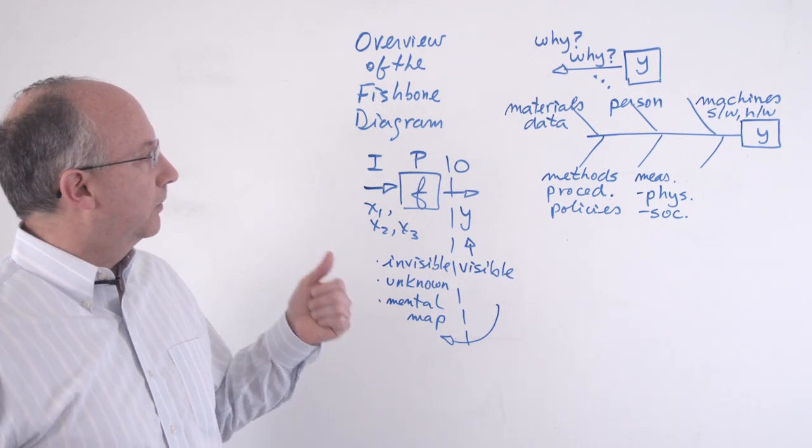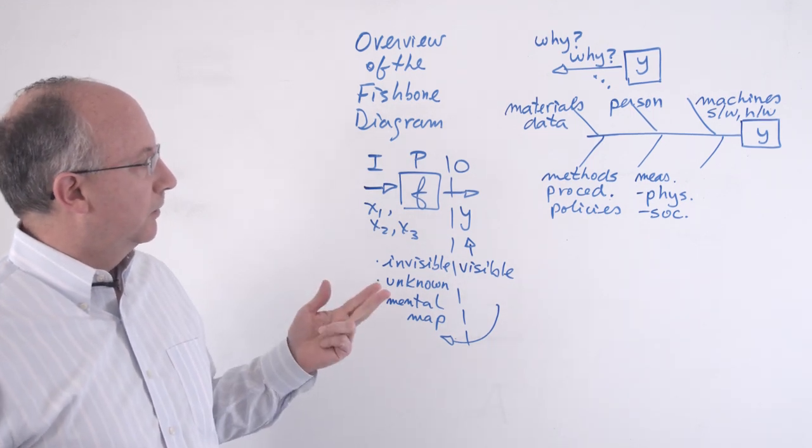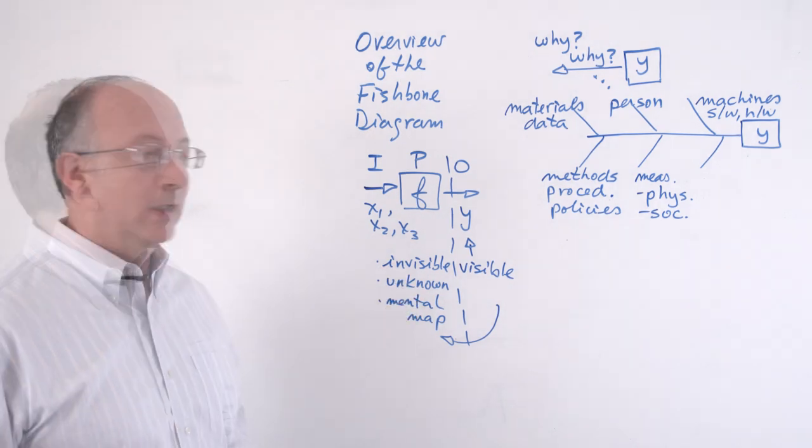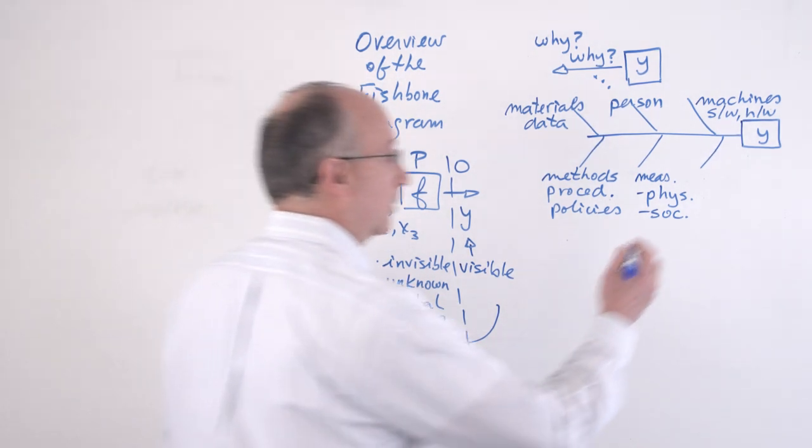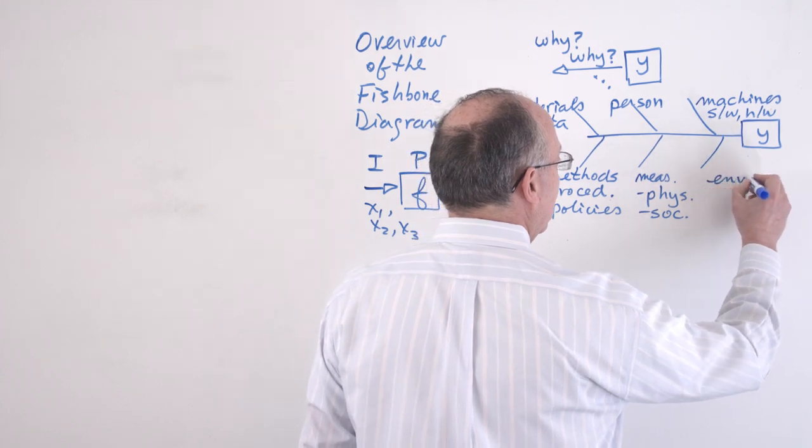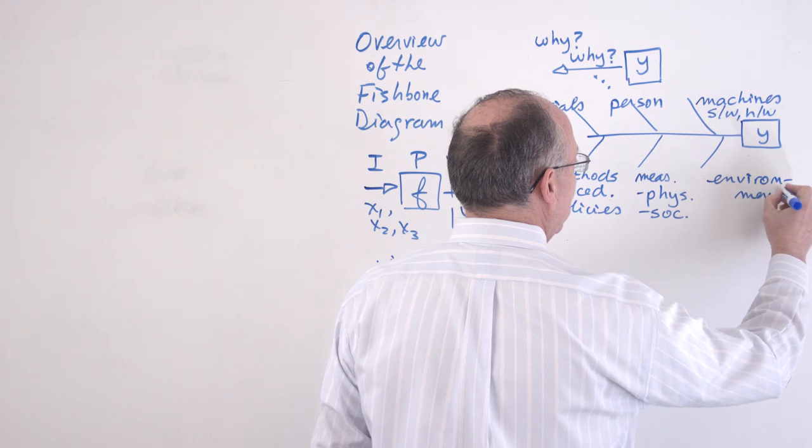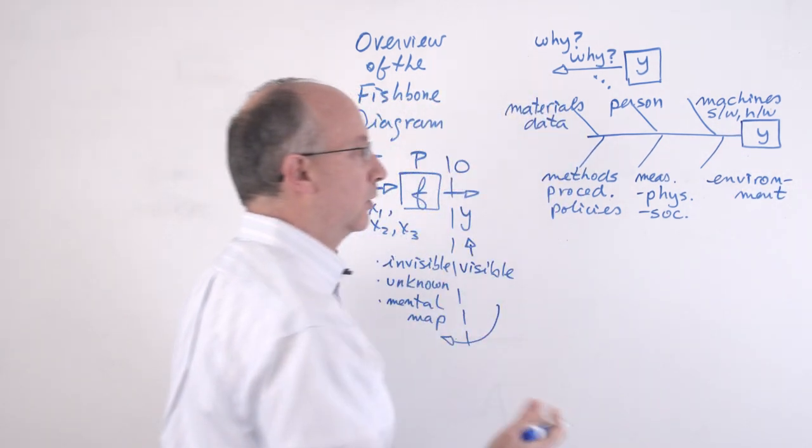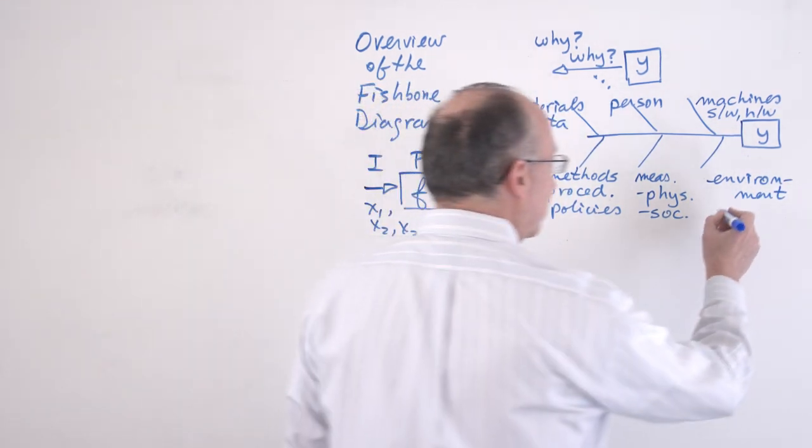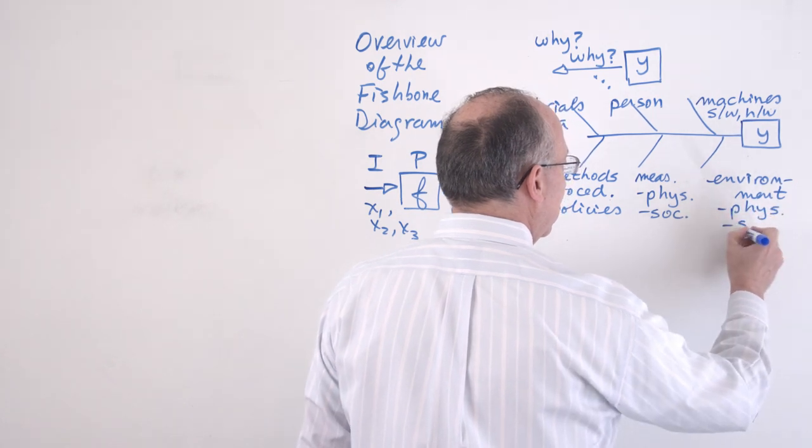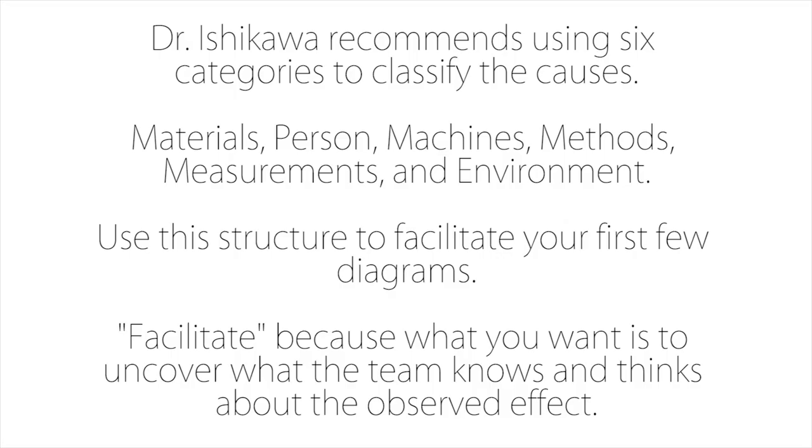So you have materials, person, machines, methods, measurement, and in addition to this we will also have the environment that is created in the place of work. The environment, of course, may also be physical environment, but also to a high degree the social environment. How we collaborate or not. How we support one another or not.